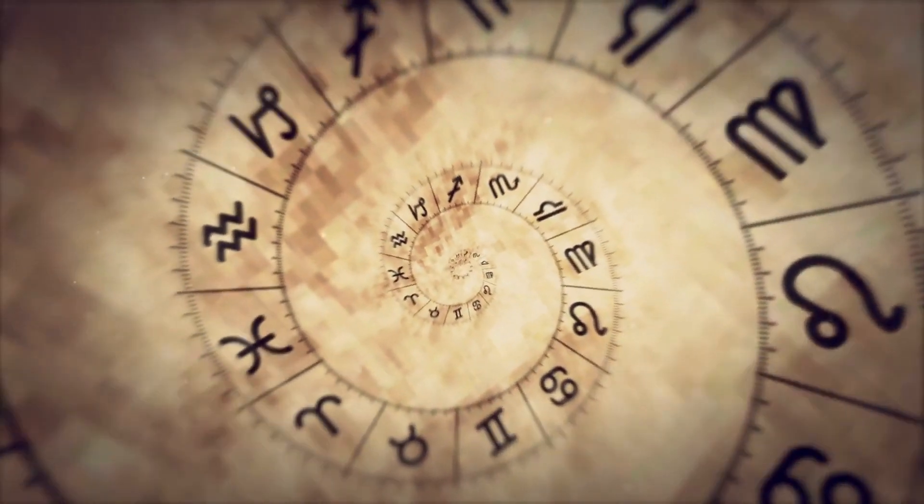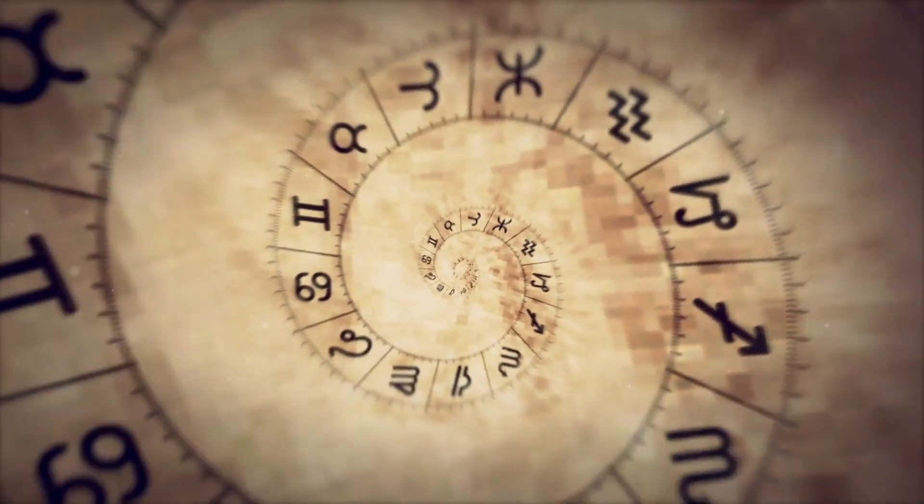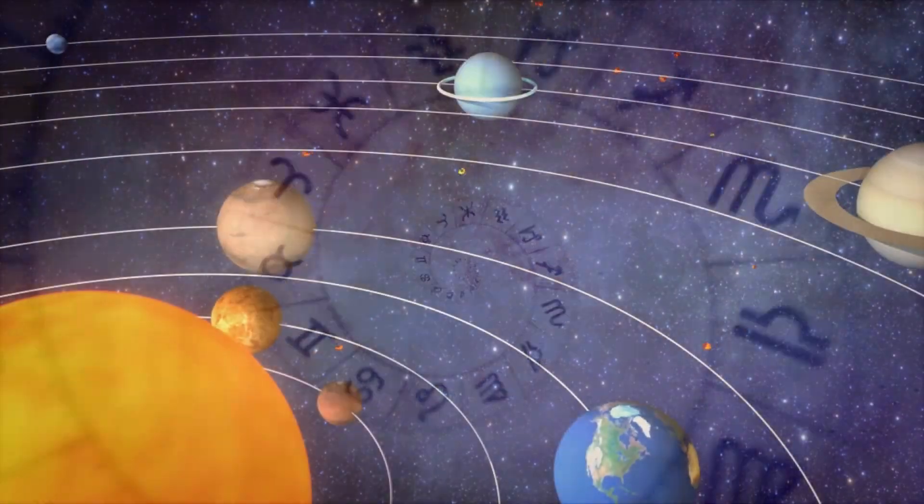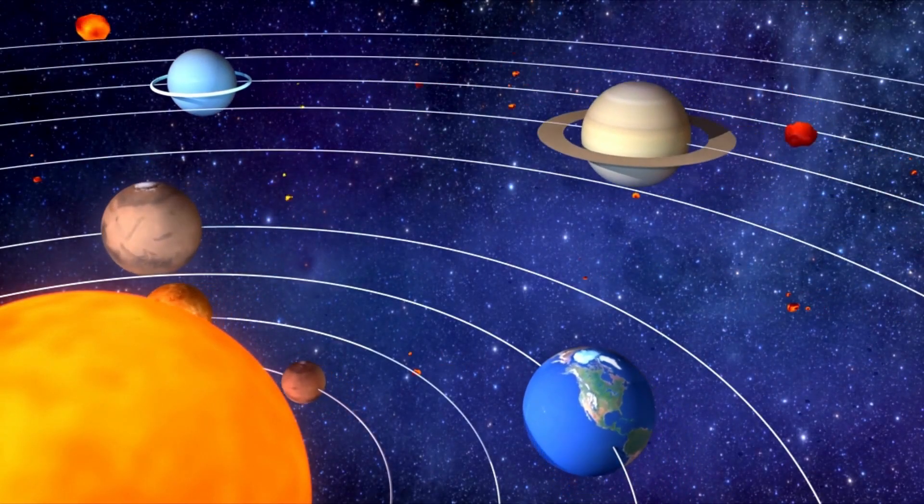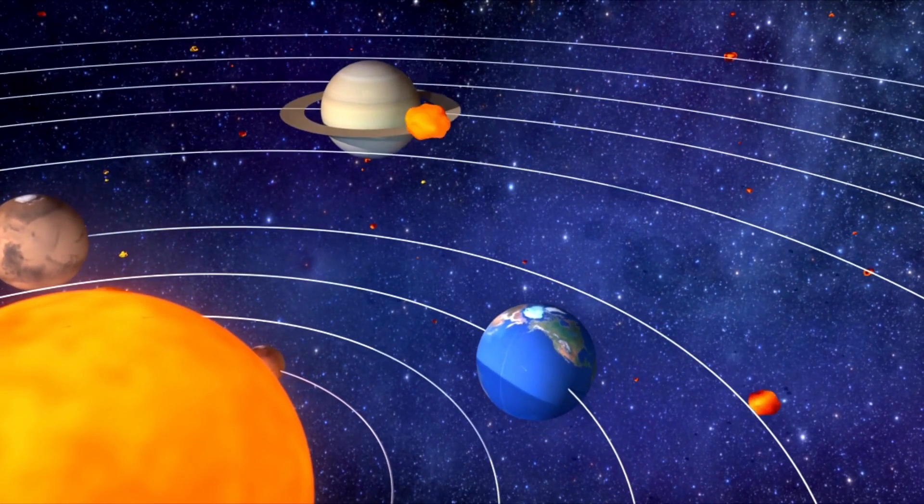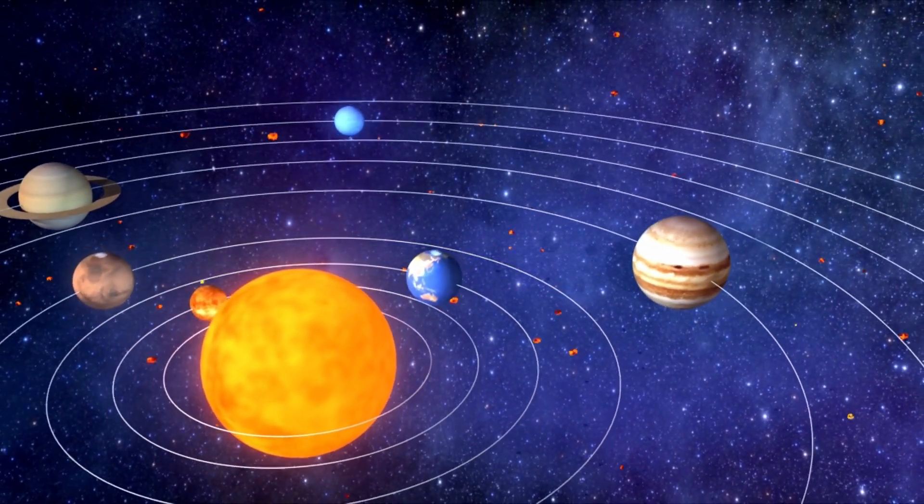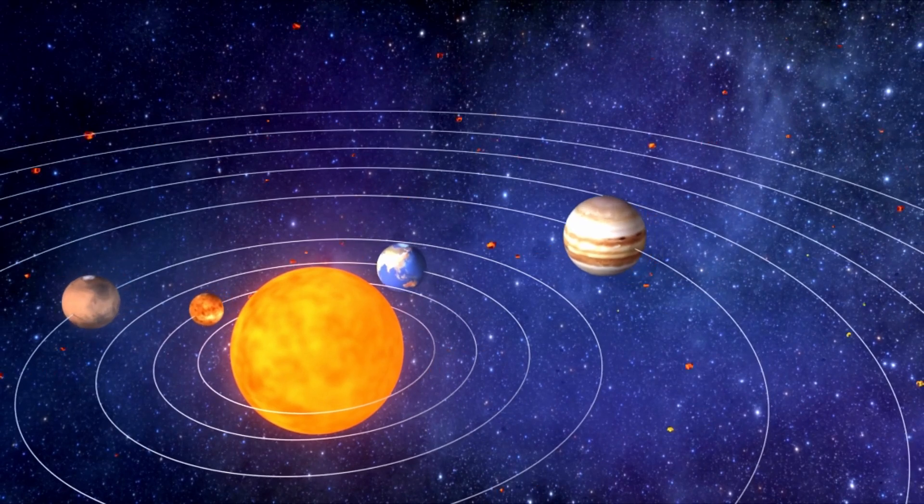As a pseudoscience, astrology makes claims about the natural world that are not supported by evidence or data, and usually employs other tactics to pass itself off as true. For example, horoscopes are almost always worded in a general way that will apply to just about anyone who reads them, and so they come across as being accurate.